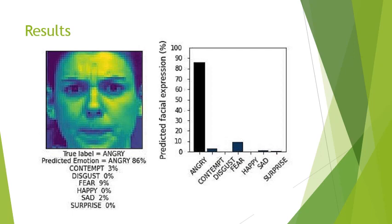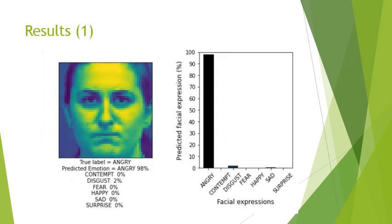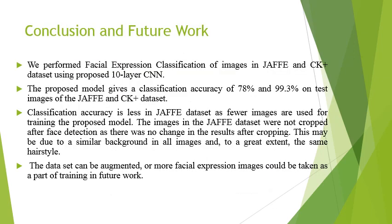Here are some sample results. The true label is 'angry' and the model predicts angry at 86 percent confidence. Since any facial expression naturally mixes two or more expressions, the model gives probabilities: angry 86%, contempt 3%, fear 9%, and so on. In another result, the true label is also 'angry' and the model predicts the person is angry at 98 percent confidence.